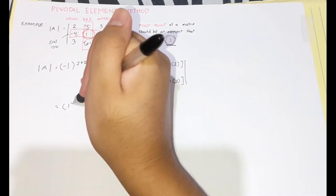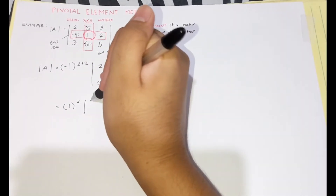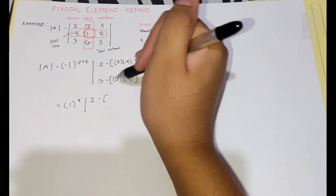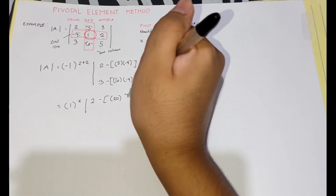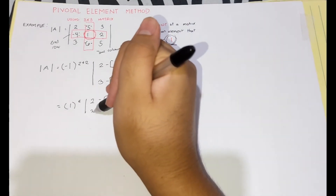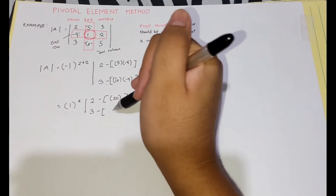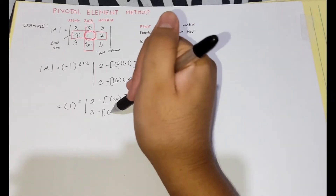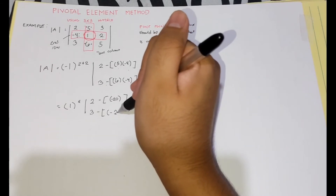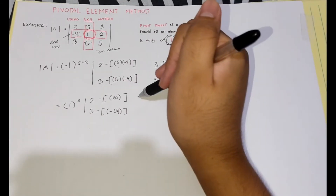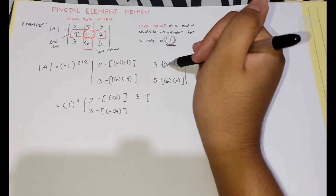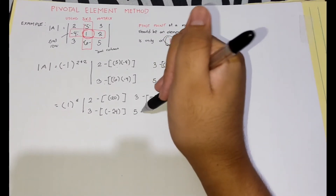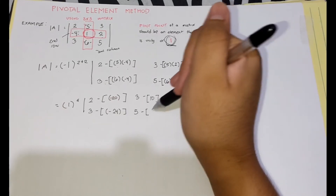The path of the pivotal point is 2 plus 2 equals 4. We find the product of nearest elements: 2 minus the product of 5 and negative 4, which is negative 20. Then 3 minus the product of 6 and negative 4, which is negative 24. Next, 3 minus the product of 5 and 2, which is 10. And lastly, 5 minus the product of 6 and 2, which is 12.